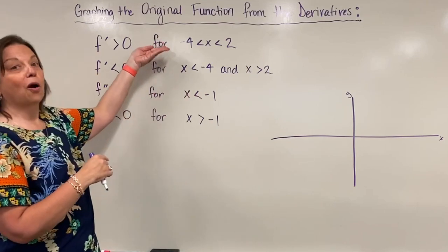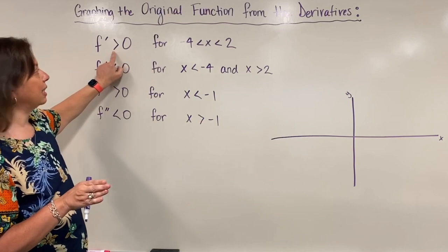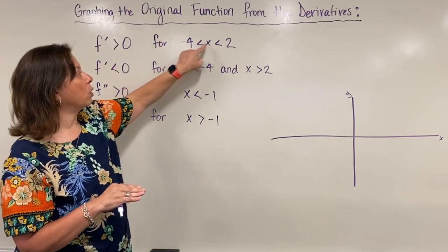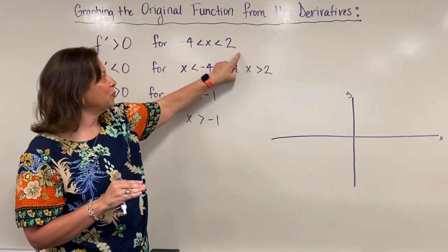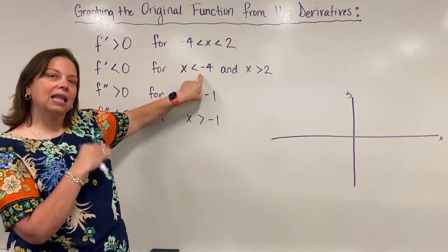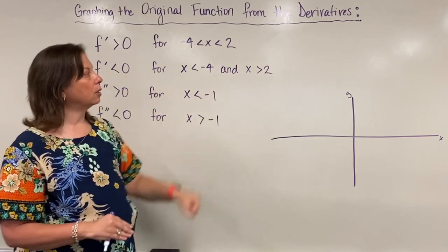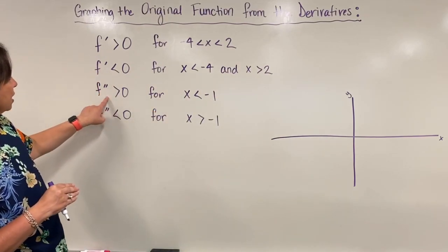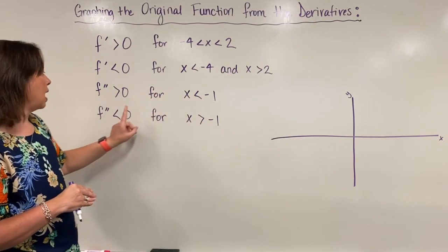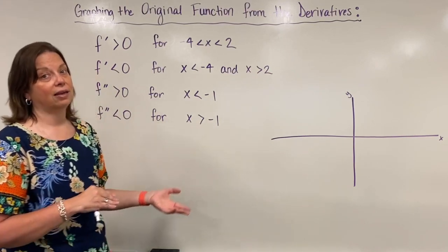Imagine we're only given this information: the first derivative is positive for x from negative 4 to 2, not including those endpoints. The first derivative is negative for values less than negative 4 and also greater than 2. The second derivative is positive for x less than negative 1, and the second derivative is negative for x greater than negative 1.